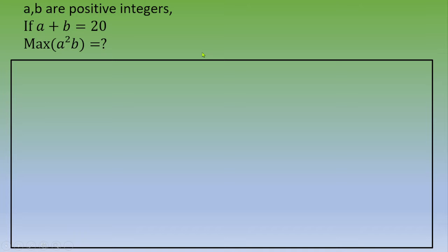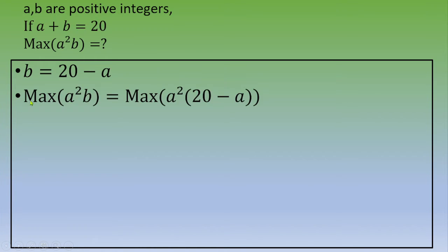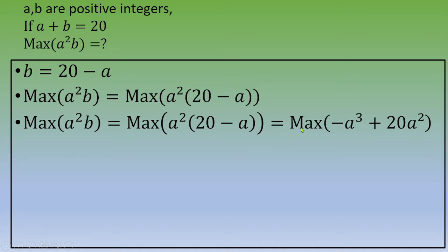Let's solve this exercise in a different way. We focus on the constraint A plus B equals 20 and express one variable as a function of the other. Let B equal 20 minus A. Then the maximum of A squared times B equals the maximum of A squared times (20 minus A).